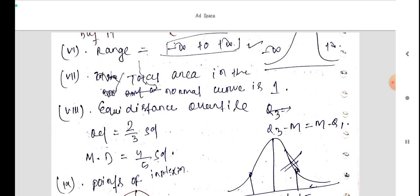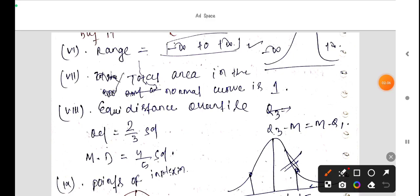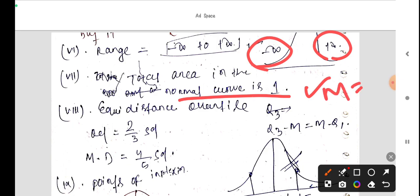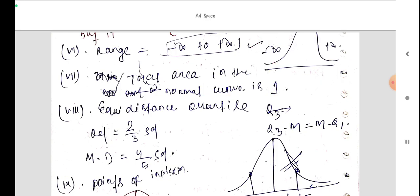Then, range is minus infinity to plus infinity. The range can be minus infinity to plus infinity. Total area in the normal curve is 1. Because mean, median, mode are all equal.